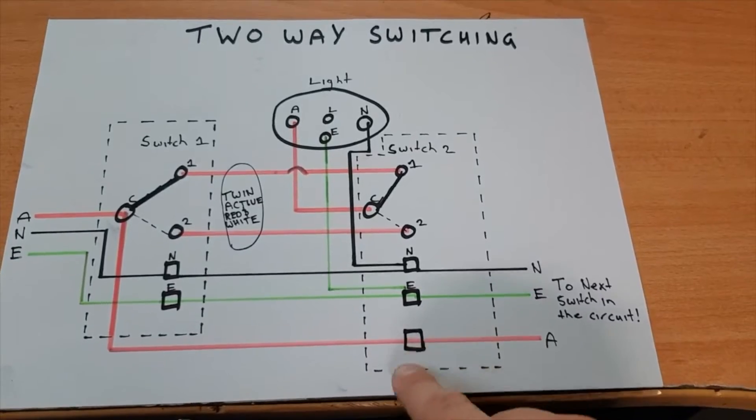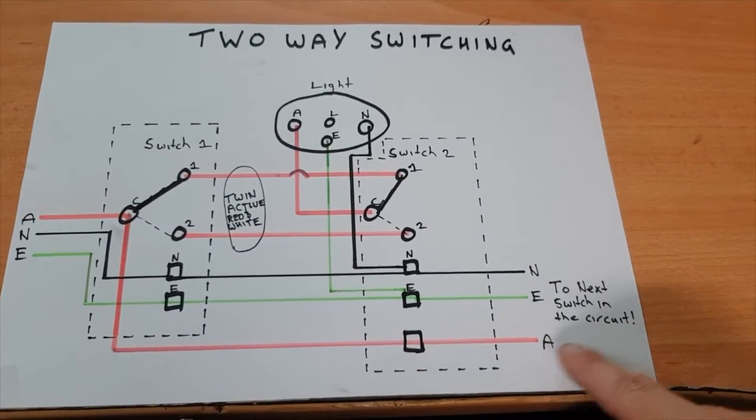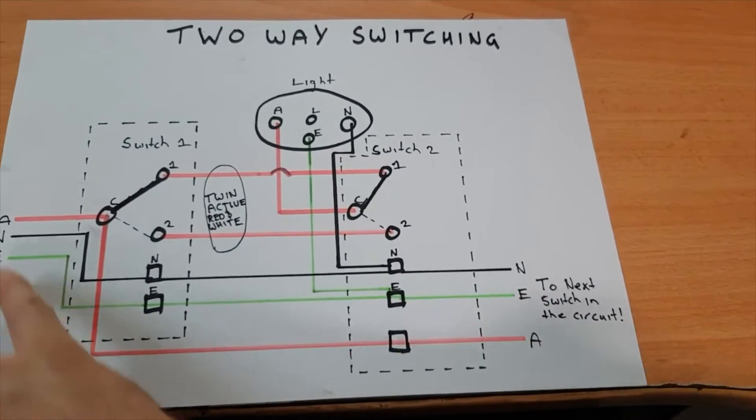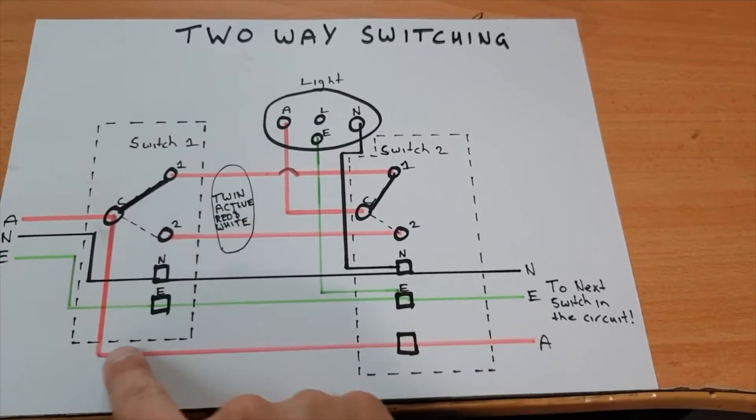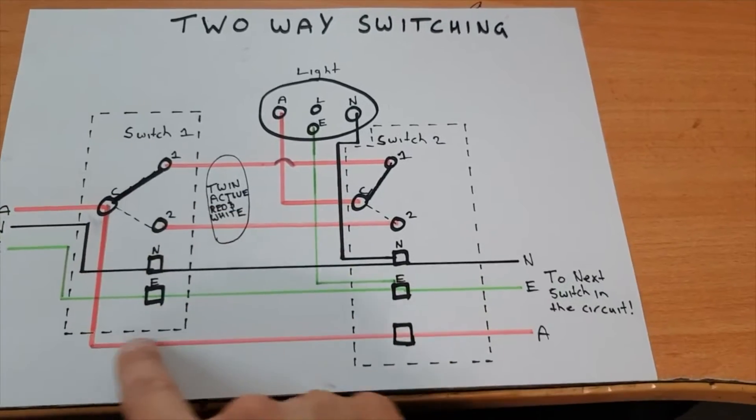Your power just goes into a connector there. You don't need a hard active there and it'll go to your next switch in the circuit. If you look at the switch, this is just your hard active that just loops from switch to switch to switch throughout your house.